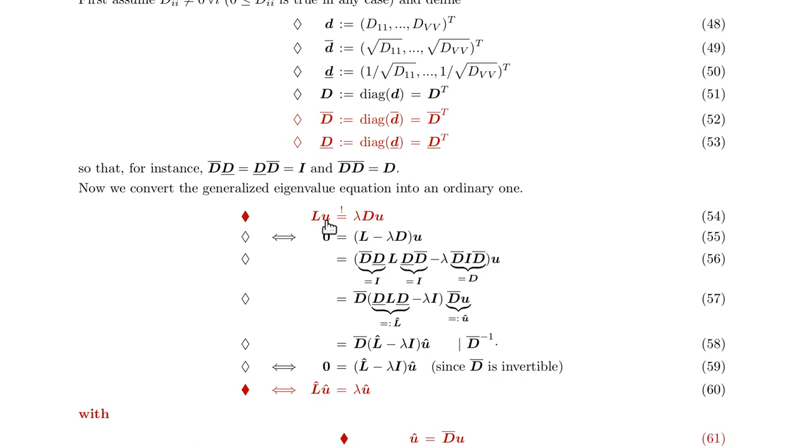Now if you have that, then one can show that the generalized eigenvalue problem turns into the ordinary eigenvalue problem. We can go through this here. First we move Lu to the right side, that gives rise to this one here. Then if we introduce these identity matrices here left and right to L, and also write this D in this form with an identity matrix in between.